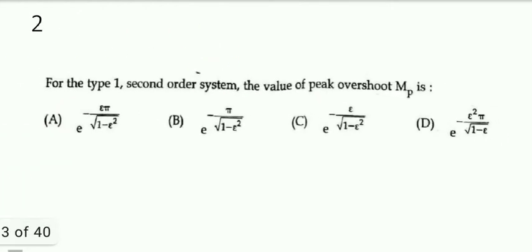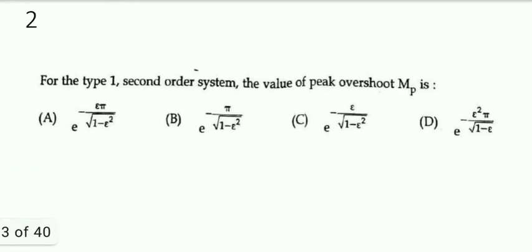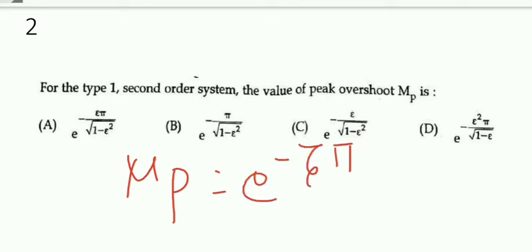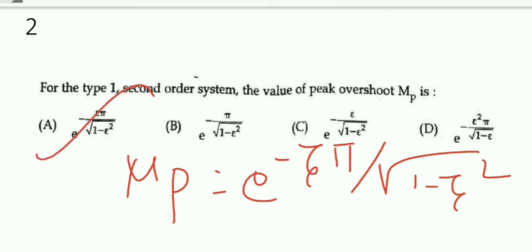Next: for a type 1 second-order system, what is the value of peak overshoot? This is a general equation. Peak overshoot Mp = e^(−ζπ / √(1 − ζ²)). That is option A. The general formula is Mp equals e to the power of minus zeta pi divided by the square root of 1 minus zeta squared.